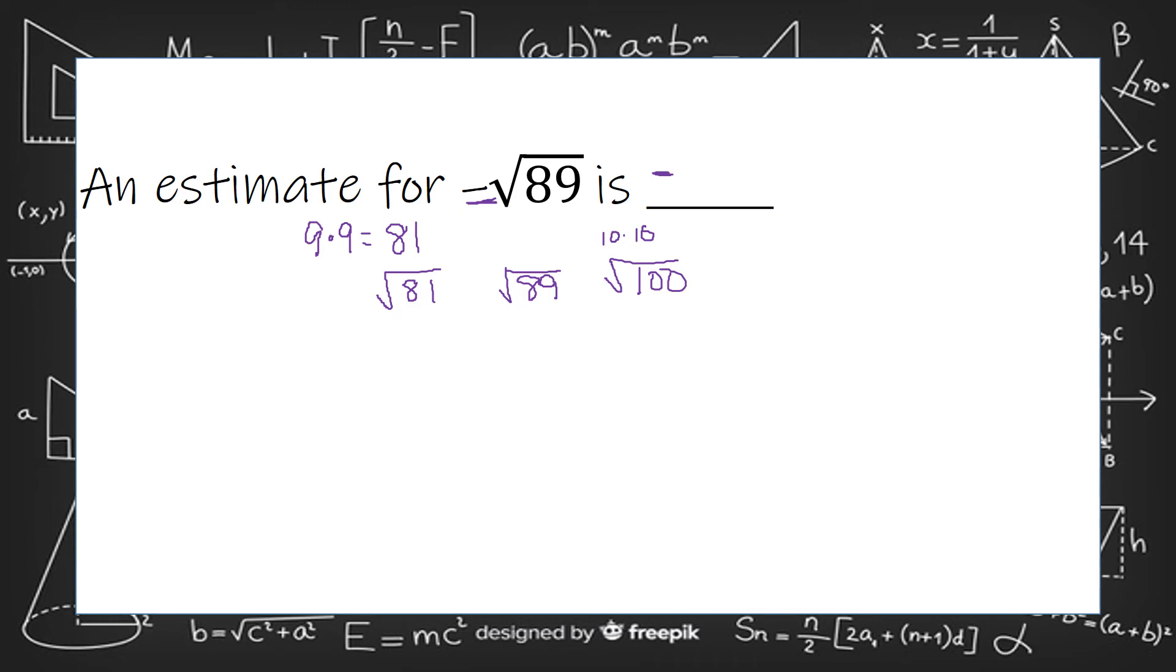We know that this negative is outside the square root, so we know that's going to be in our answer. But we don't have to do any more than that with it. So I do see that it's between 9 and 10. So it's going to be negative 9 point something.